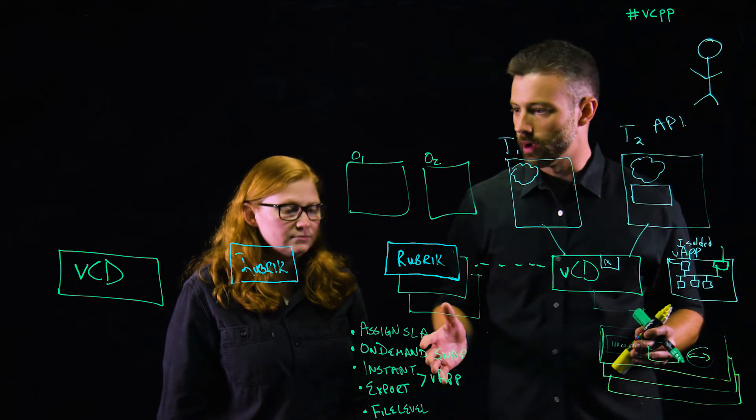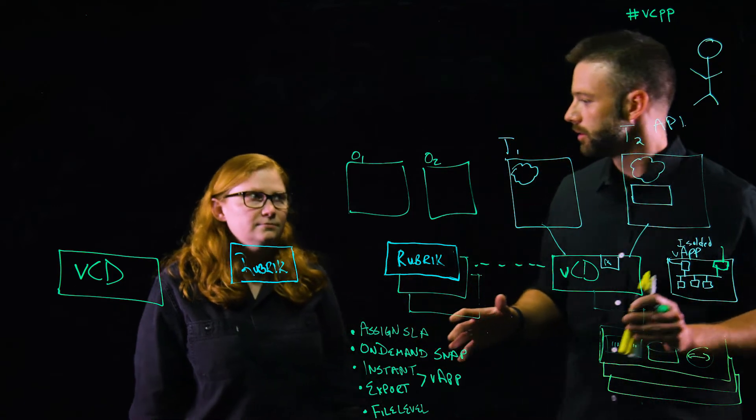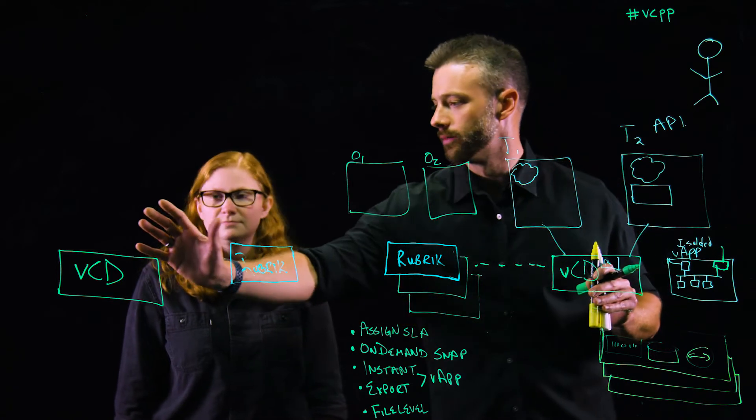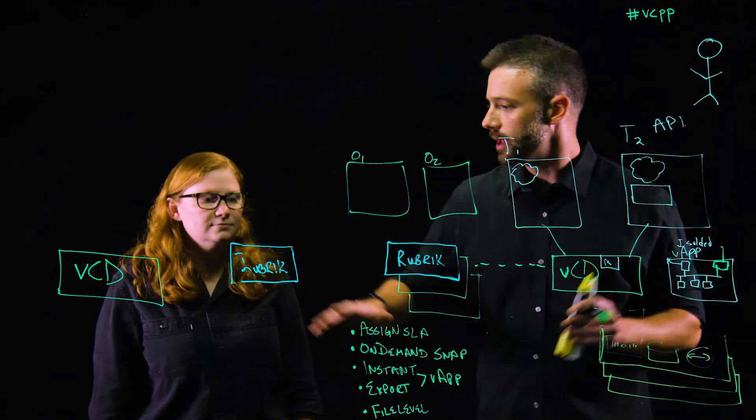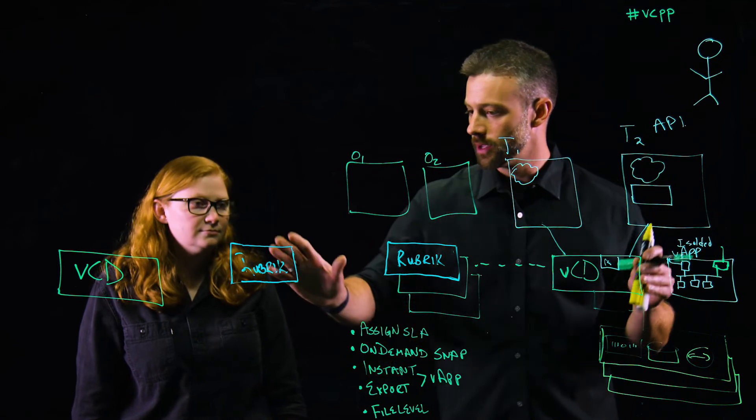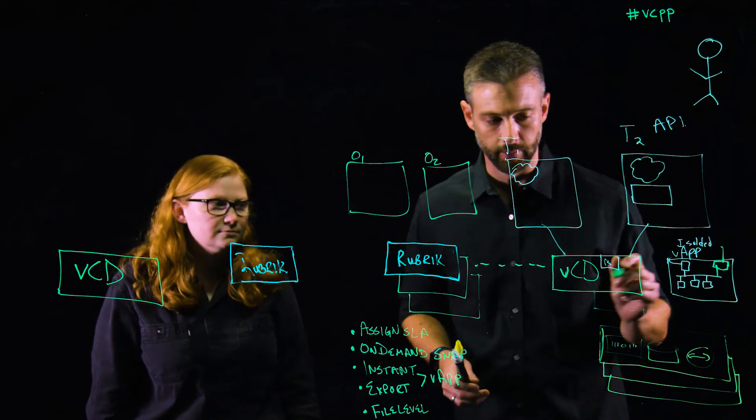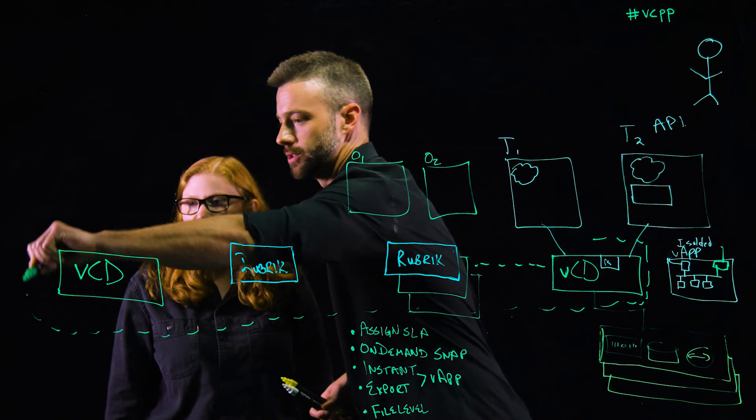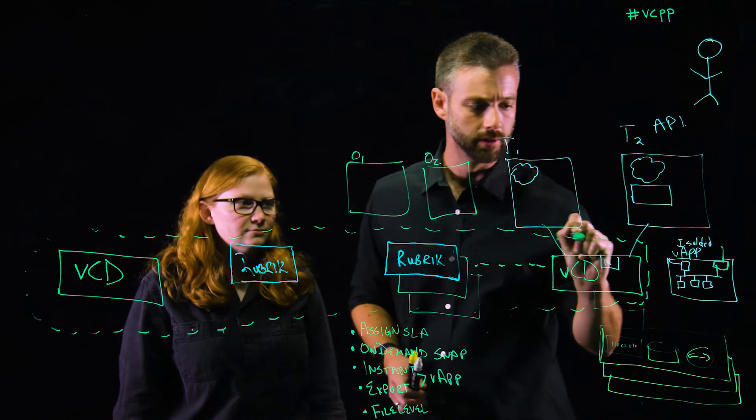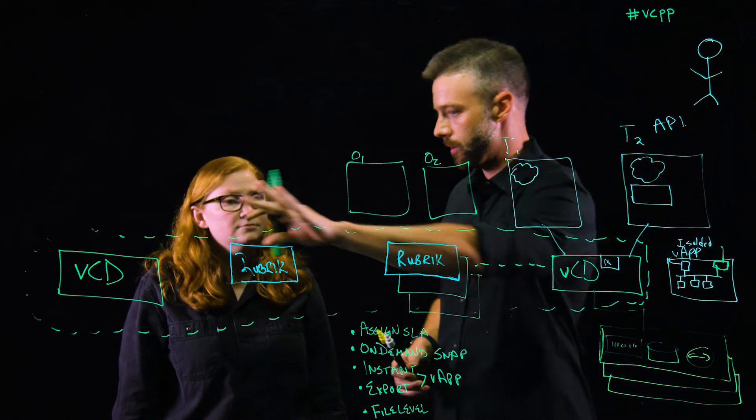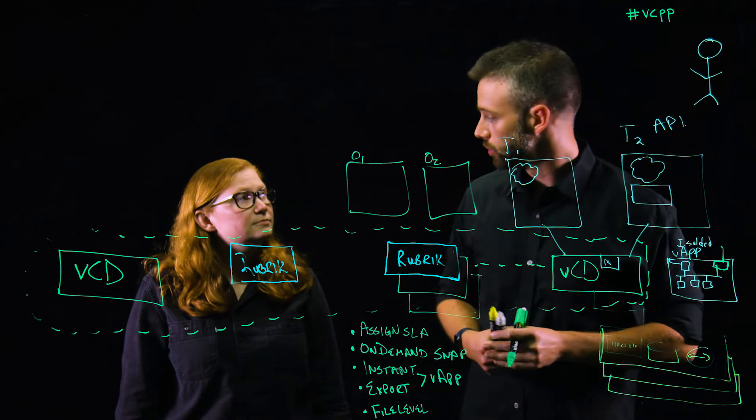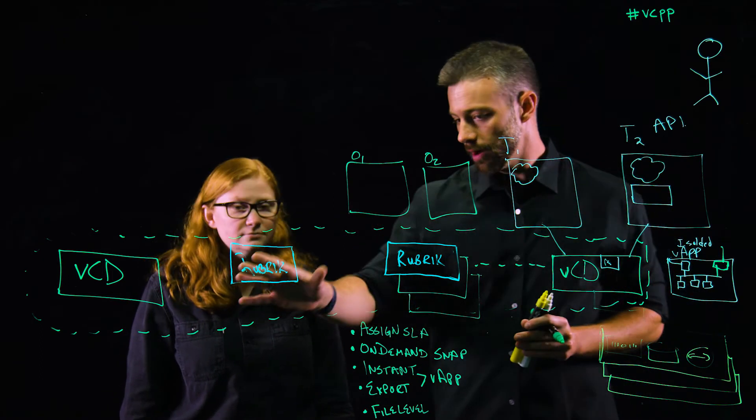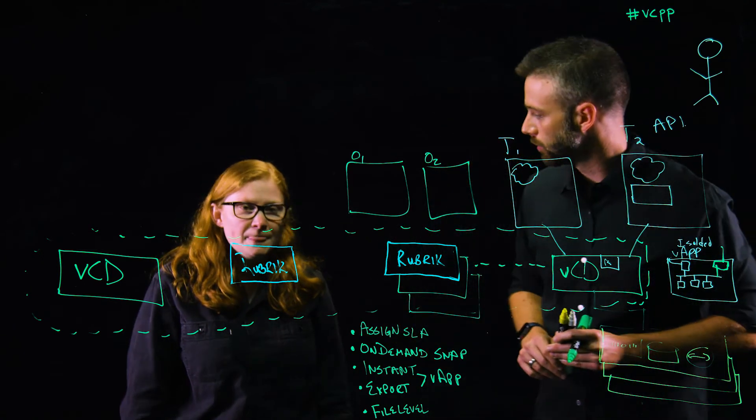So then next up, when we talk about availability zones or what I'd like to call distinct fault domains, I may have Atlanta here and let's say Charlotte location. Two independent VCD environments, two independent Rubrik environments. Inside of vCloud Director, we have something called multi-site federation. So what we can do is an organization can federate their credentials between apply a level of trust and from the UI access either site at any given time. How do we work with this within Rubrik? What can we provide within that?